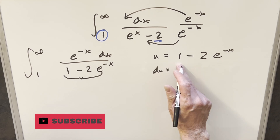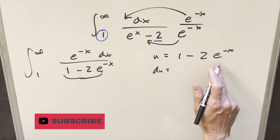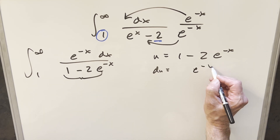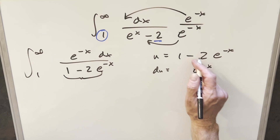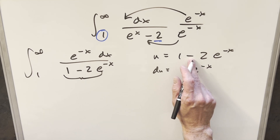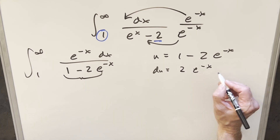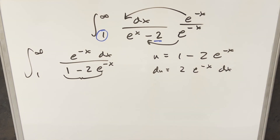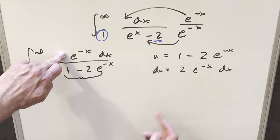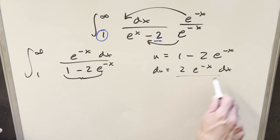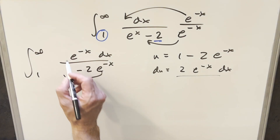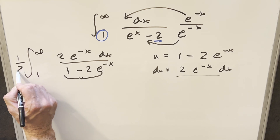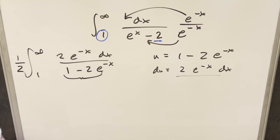Taking the derivative: the derivative of 1 is 0. For the second term, we have e to the minus x, a minus sign comes out, times the minus 2, so we're just going to have a plus 2 e to the minus x dx. Then in order to make the numerator exactly what we have for du, we multiply in a 2 there and put a 1 half out front to compensate.